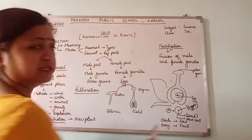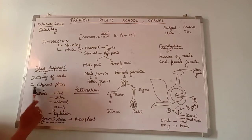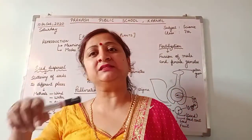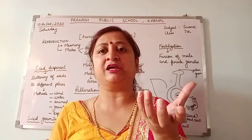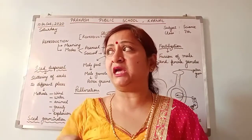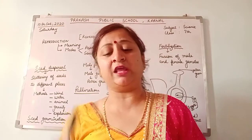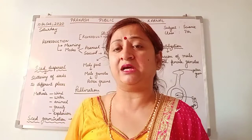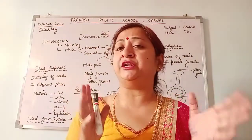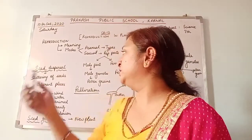After the seed is formed, seed dispersal occurs - that means scattering of seeds to different places. When seeds are produced and fall at the same place where the plant is, there are too many seeds competing for the same resources like air, sunlight, temperature, and water. That's why it is very necessary to disperse these seeds to different places so they can develop properly.